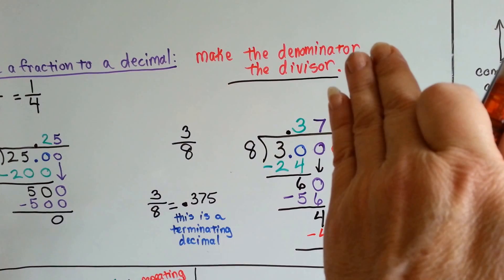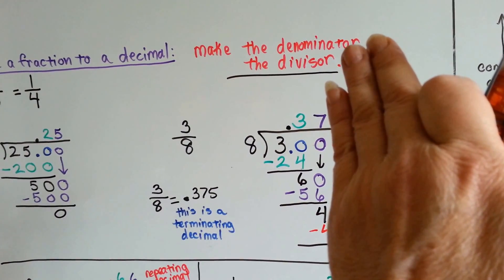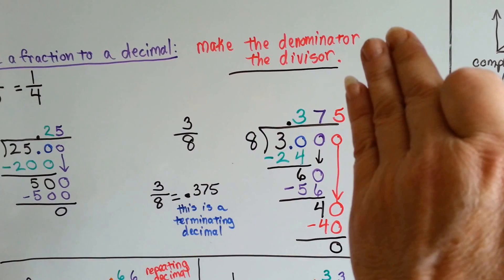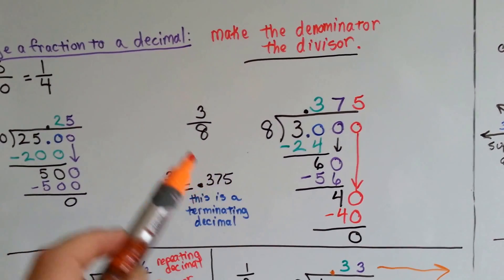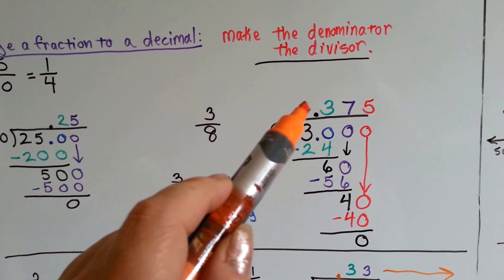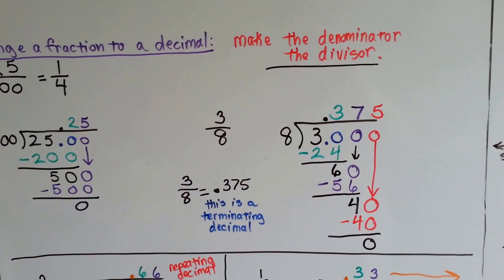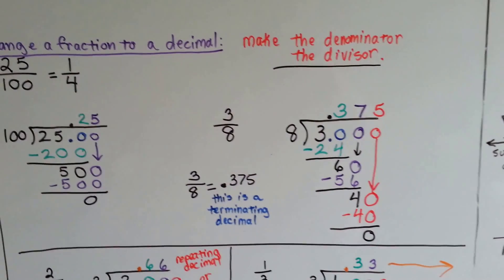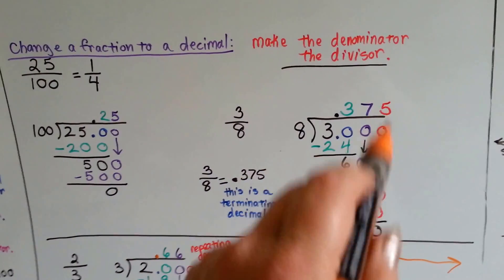We do subtraction, we get six. We add another zero. Eight times seven is fifty-six. So, we do our subtraction and get four, and so we add another zero. Eight times five is forty, it comes out even. So we know that three-eighths is equal to .375 or .375 thousandths as a decimal. And it is a terminating decimal, because it ended after the five. We were all done.